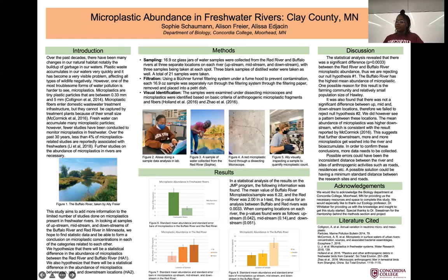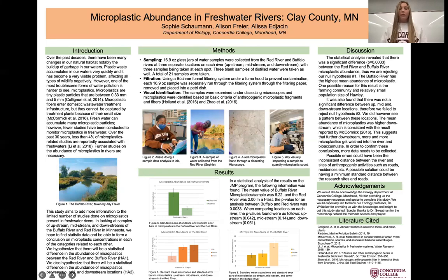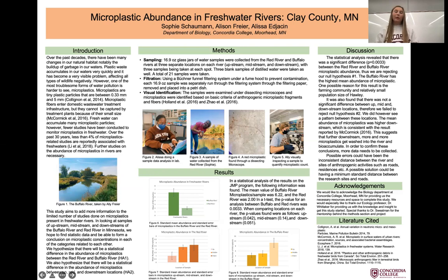For our results, the top green graph shows the abundance between the two freshwater rivers — the Buffalo River on the left and the Red River on the right. The bottom red graph shows the difference between the Red River at upstream, midstream, and downstream, and the yellow graph shows the difference between microplastics in the Buffalo River at upstream, midstream, and downstream. We were able to find a significant difference between the Red and Buffalo Rivers.